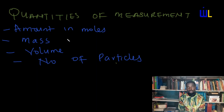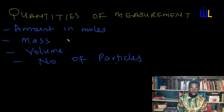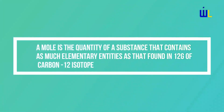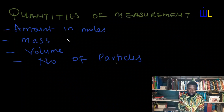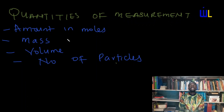The first thing is amount in mole. To define amount in mole, a mole of a substance is simply defined as the quantity of a substance that contains the same elementary entities as that found in 12 grams of carbon-12 isotope. Now, this seems ambiguous, so let's try to help you understand it.